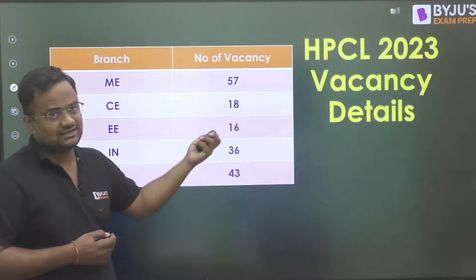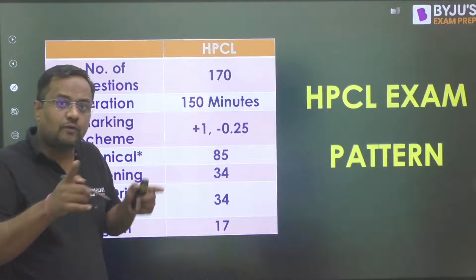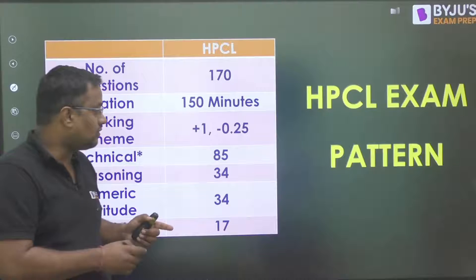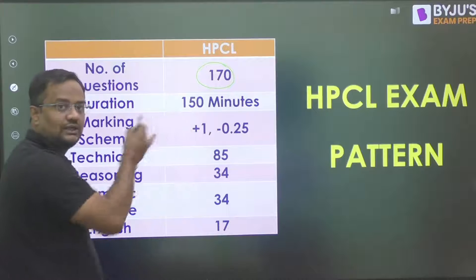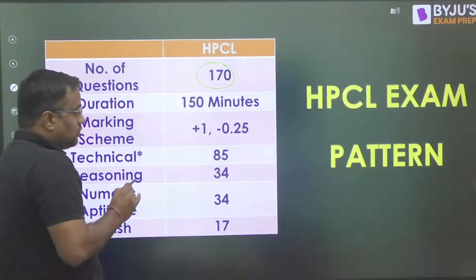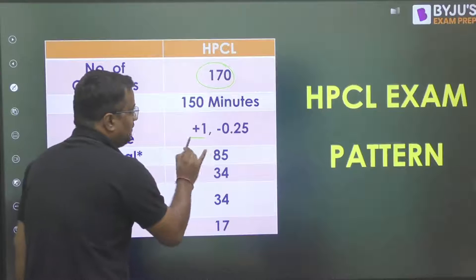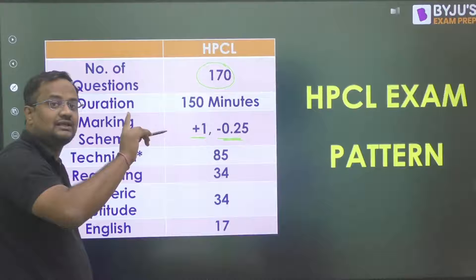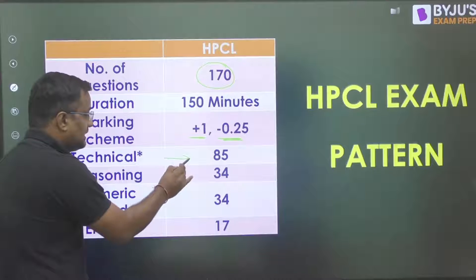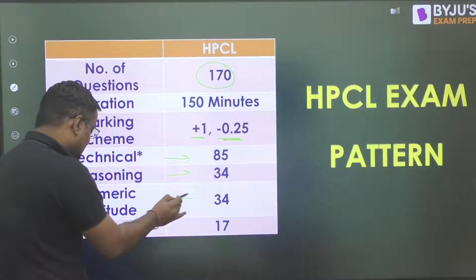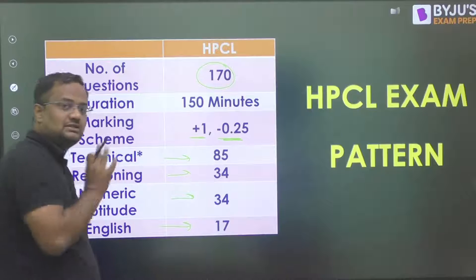The paper pattern has been changed from 2023. Negative marking has also been introduced — out of 170 questions to be done in 150 minutes, every question carries one mark, plus one for correct and minus 0.25 for wrong. Earlier there was no negative marking, which is why the cutoff is now a bit higher. Out of 170 questions, 50 are technical, 34 are reasoning, 34 are aptitude, and 17 are English.